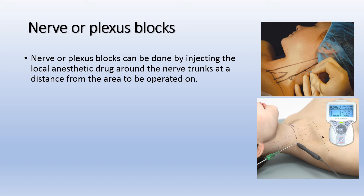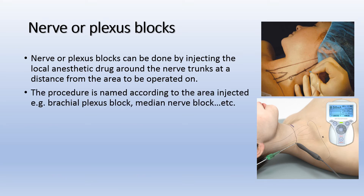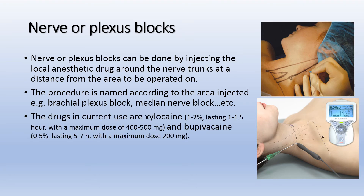Nerve or plexus block can be done by injecting the local anesthetic drug around the nerve trunk at a distance from the area to be operated on. The procedure is named according to the area injected — for example, brachial plexus block or median nerve block. The drugs currently used are xylocaine and bupivacaine.